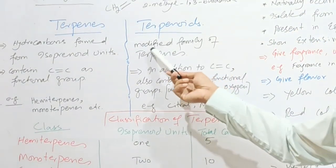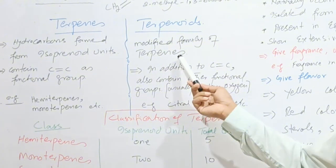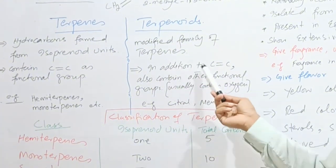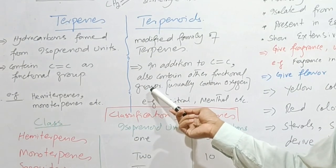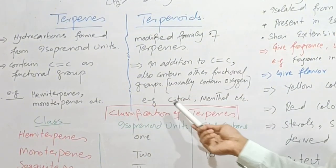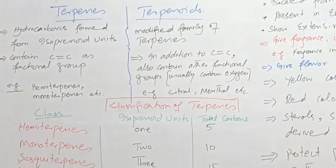While terpenoids are modified family of terpenes. In addition to carbon double bond they also contain other functional group and the other functional group usually contain oxygen. For example citral, menthol, etc.